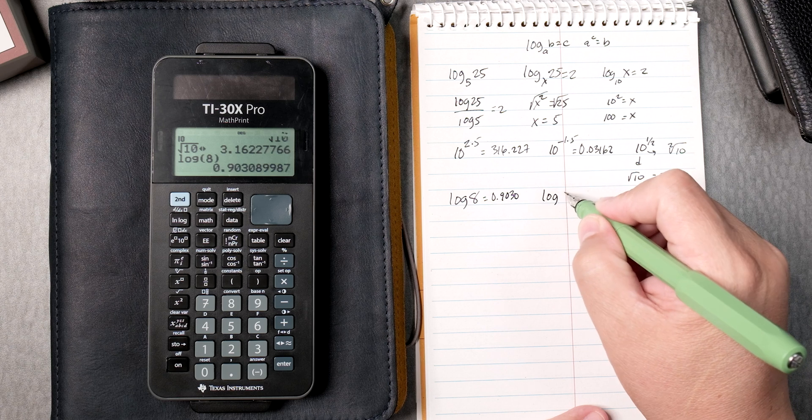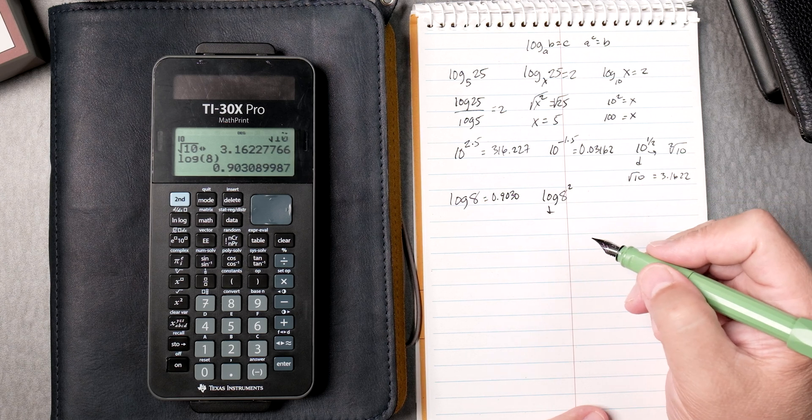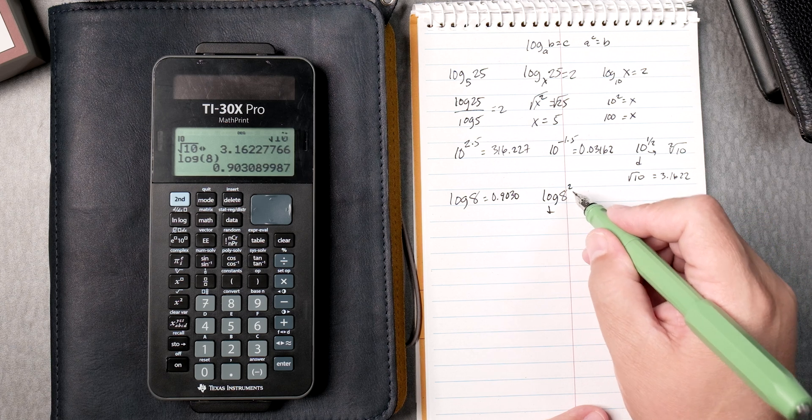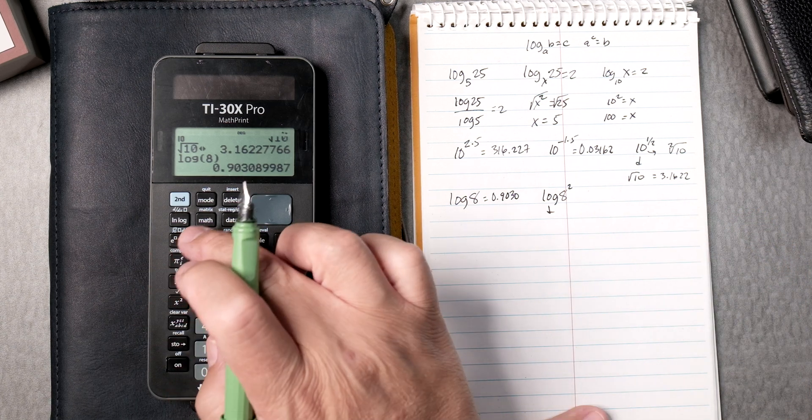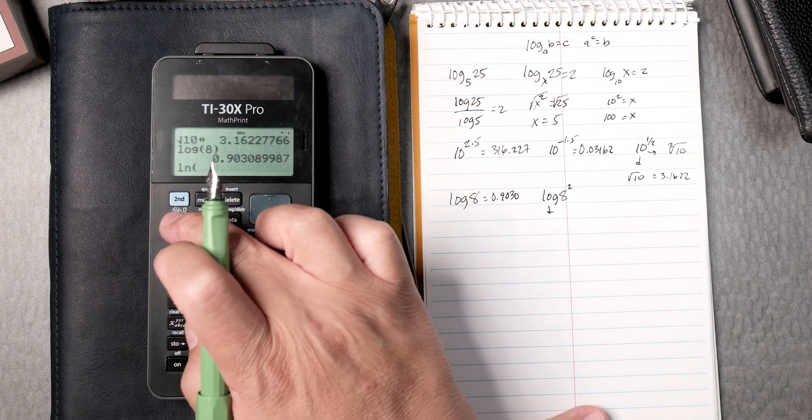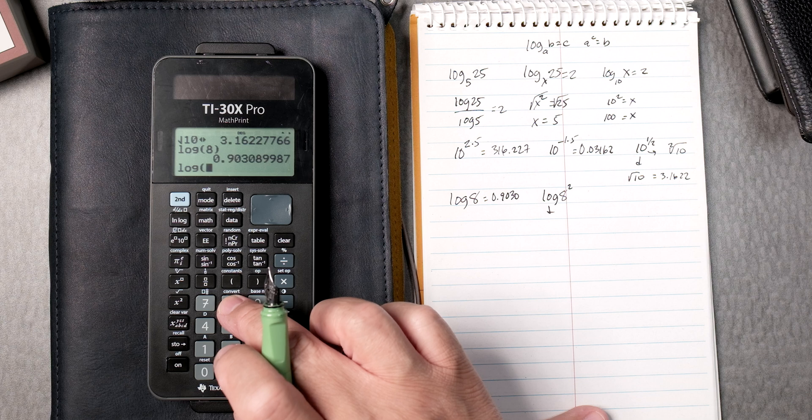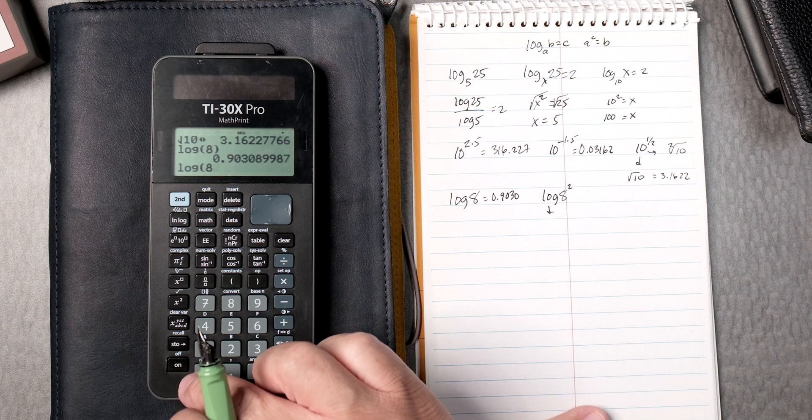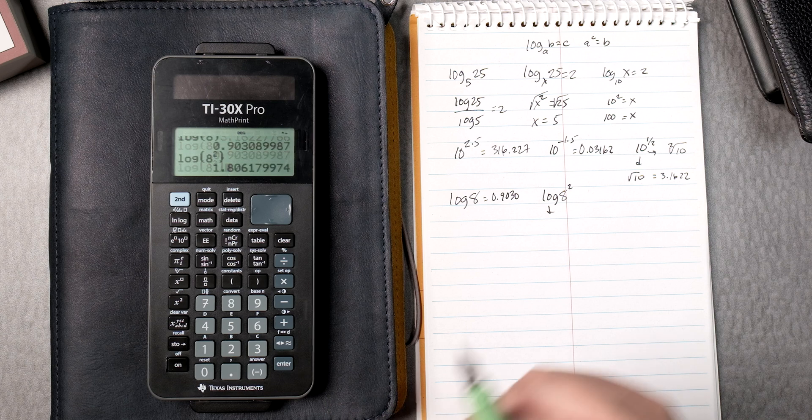The log of 8 squared. Well, this one, 8 squared. So let's do, you might be able to do the whole thing. Let's see. You press that twice. You put an 8, and then you square it, and you close it, and then you press enter.